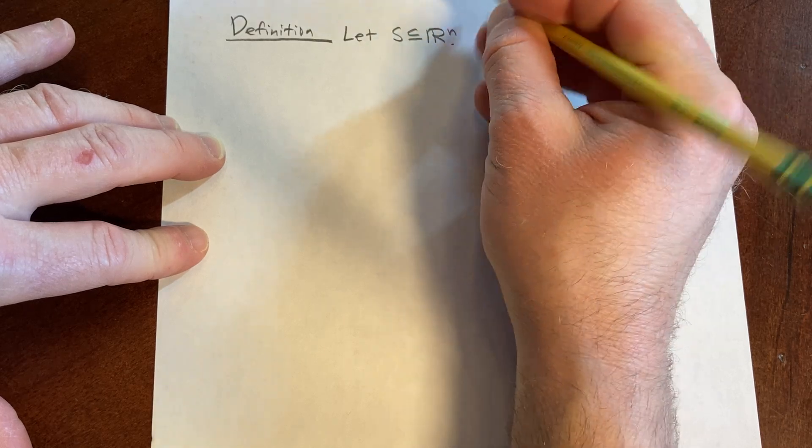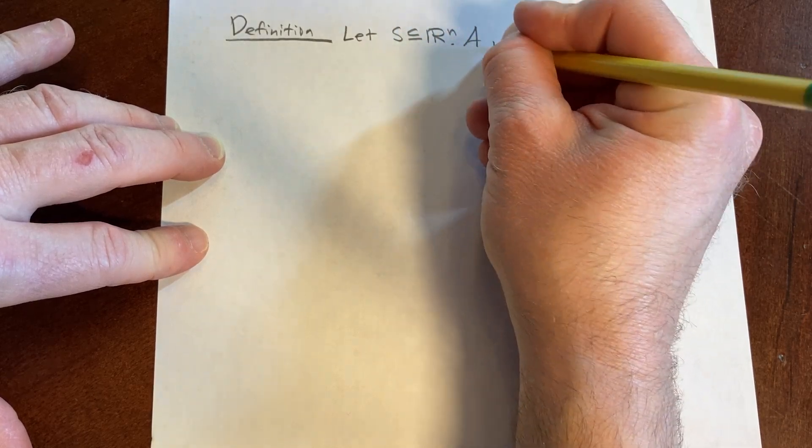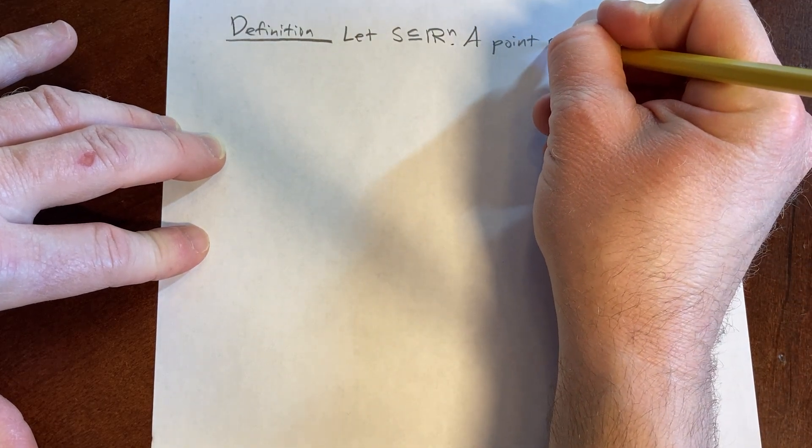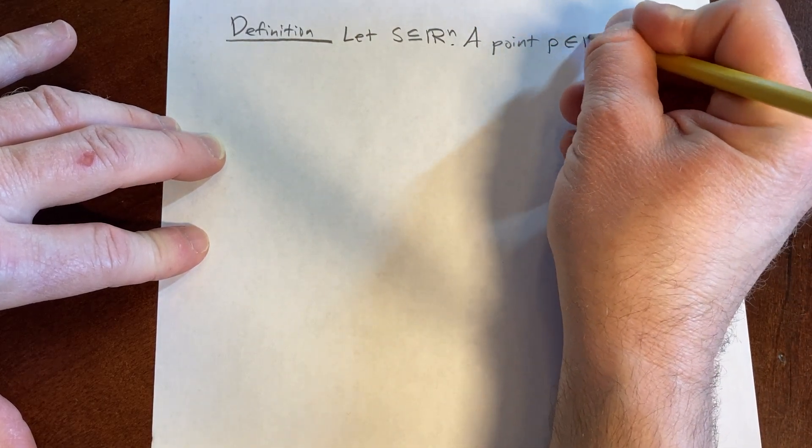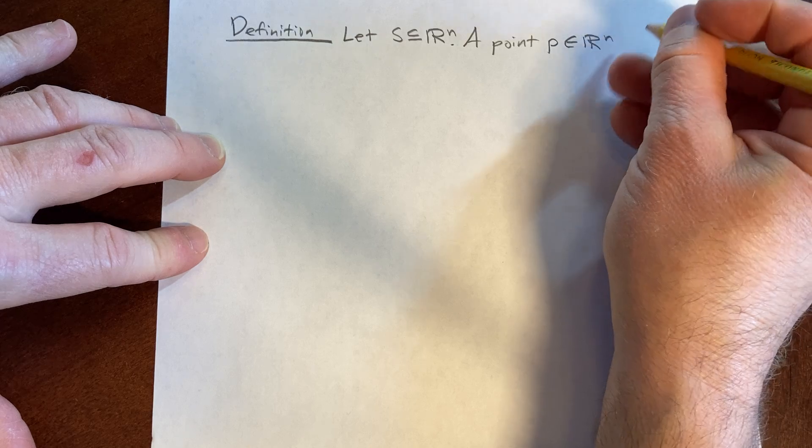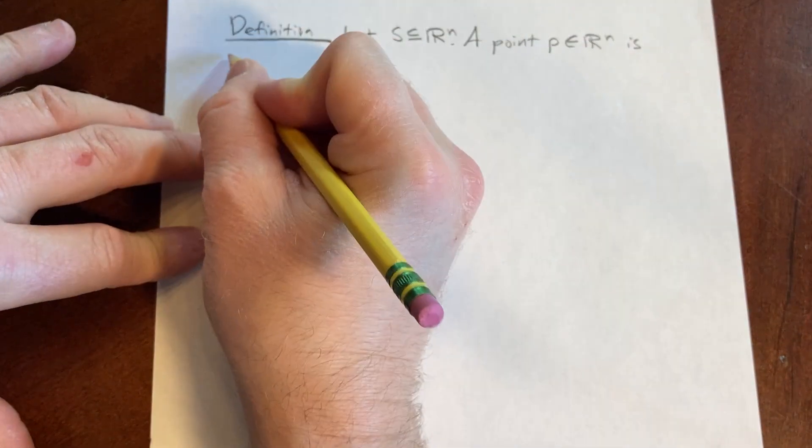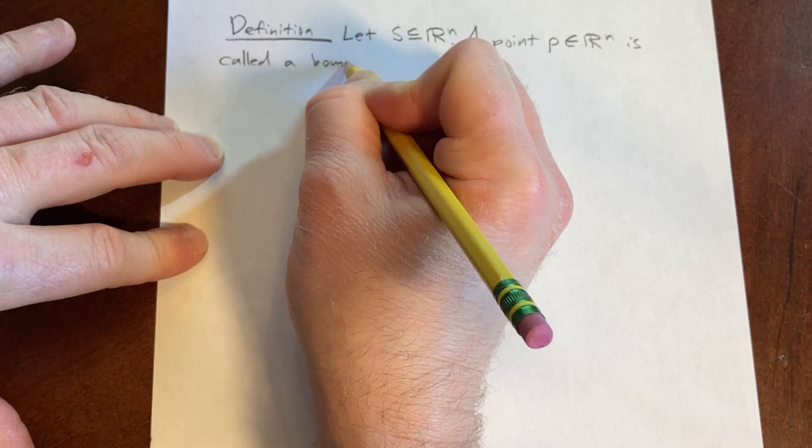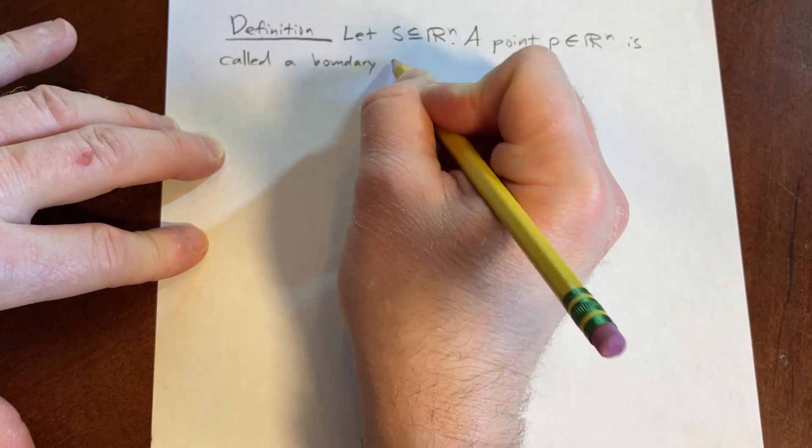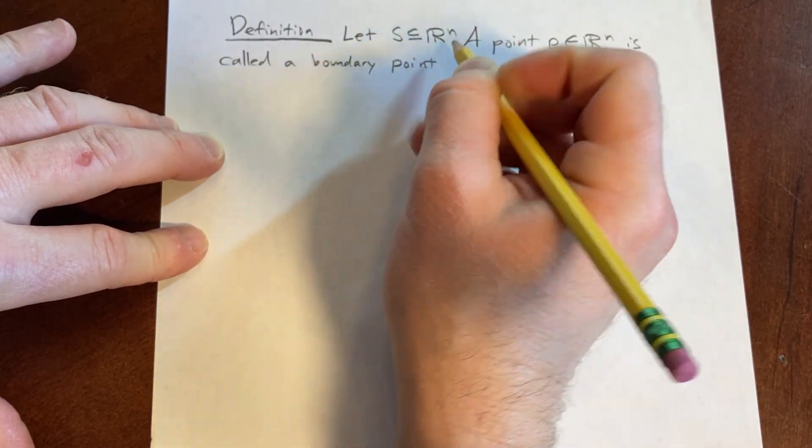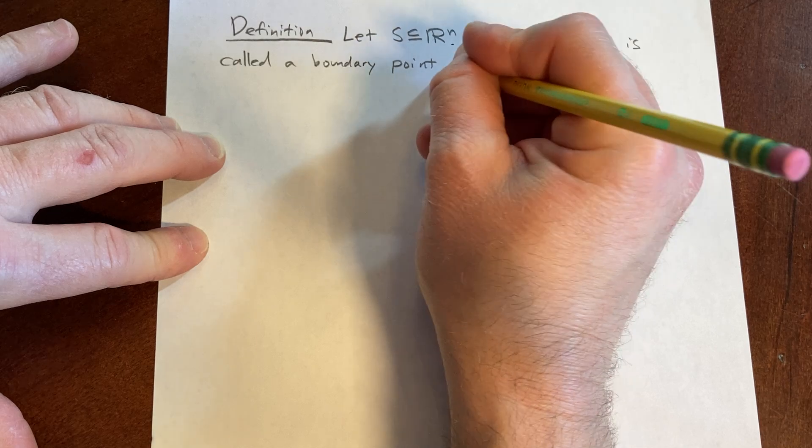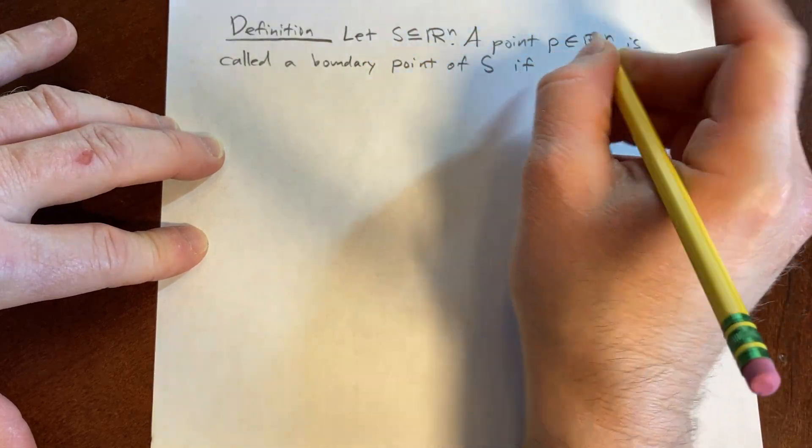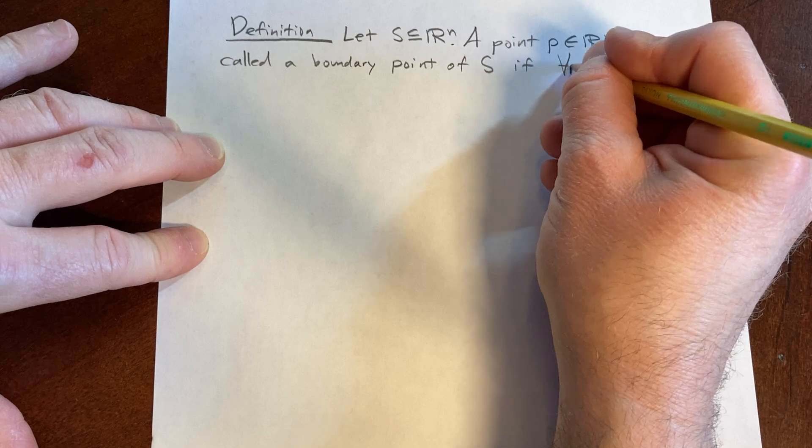And we're going to define a boundary point. So a point P in Rn is called a boundary point, it's called a boundary point of S if for all R greater than zero,